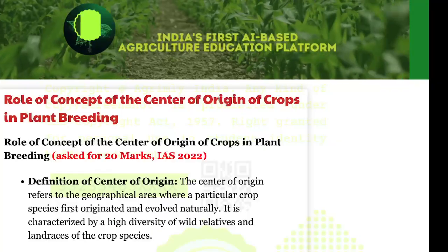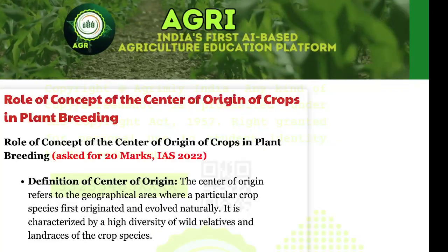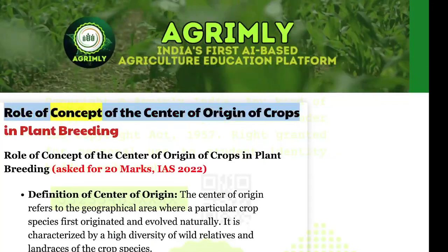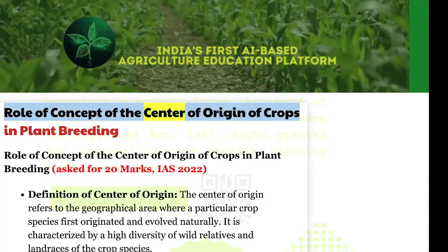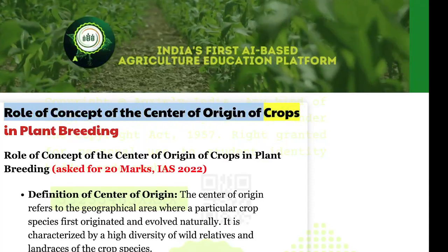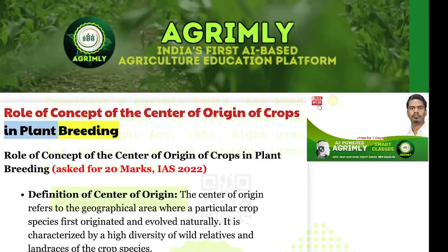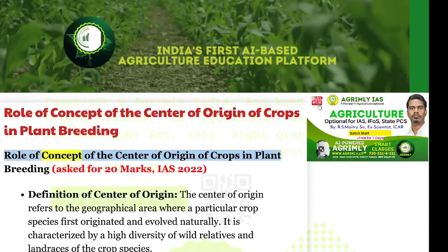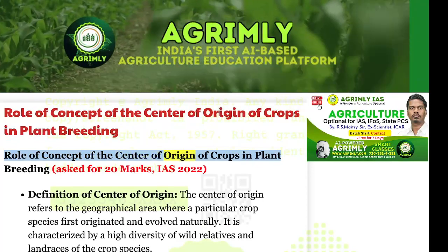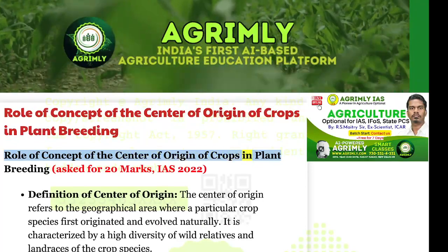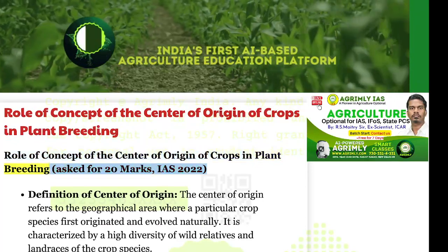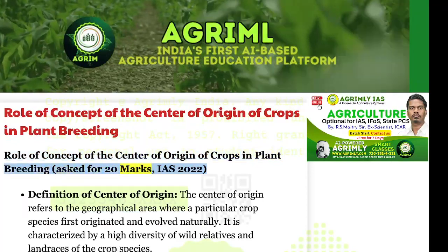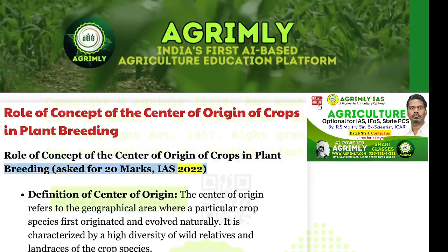Today's topic is: Role of the Concept of the Center of Origin of Crops in Plant Breeding — asked for 20 marks in IS 2022.